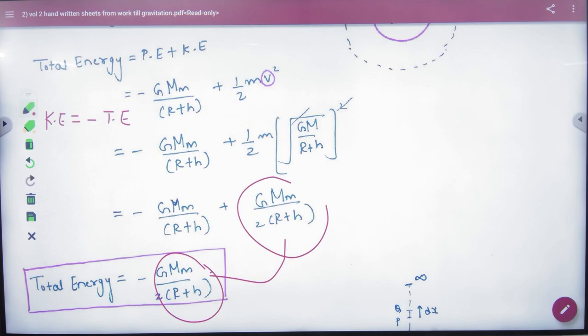What is happening? The total energy is equal to potential energy by 2. This is also done. But if not done, let's do it from here.